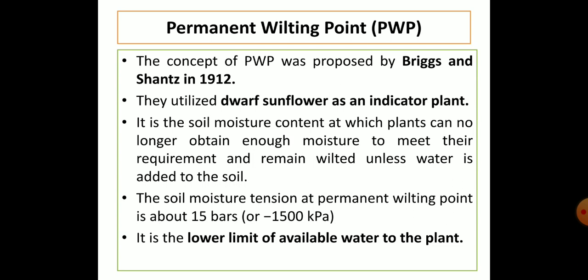At permanent wilting point, plants do not completely die. Always remember — unless water is added to the soil, they remain wilted, but if you add water to the root zone they can revive. However, if you take them to a moist chamber, they will not regain turgidity — you must apply water into the root zone for them to revive. The complete death of plants occurs at the ultimate wilting point, which we will discuss next.